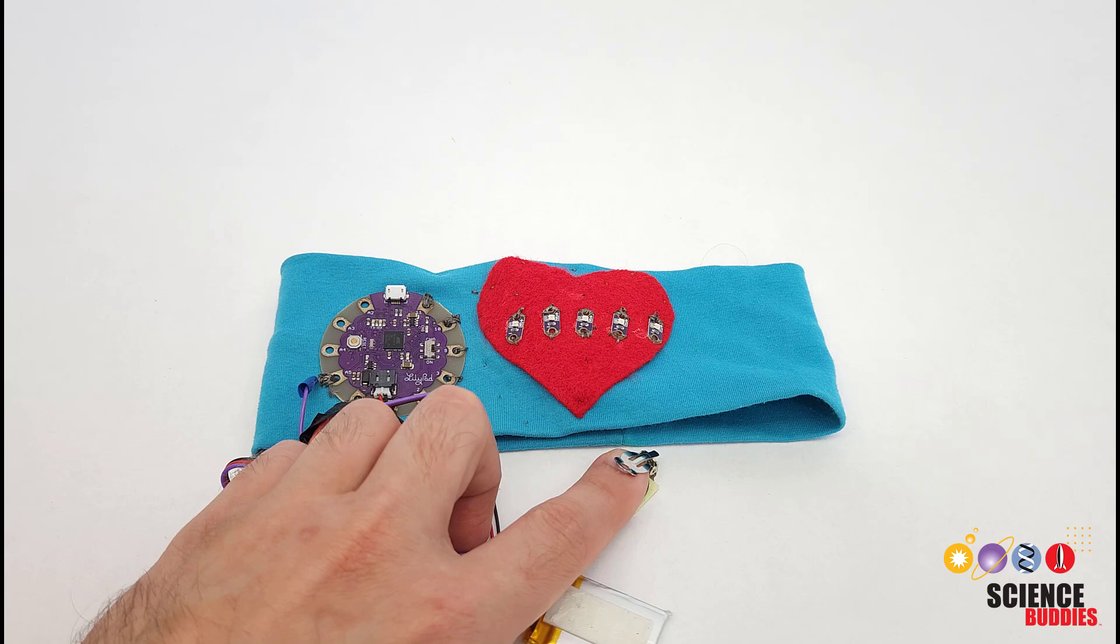This is an Arduino heart rate monitor that uses a pulse sensor on my fingertip to animate a heartbeat pattern with these LEDs. In this video, I'll tell you how it works. Check out the link in the description to learn how to make your own.